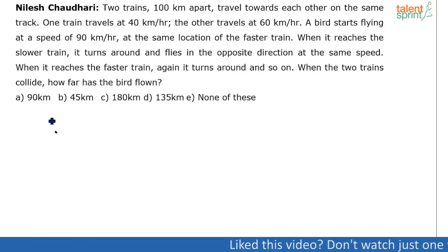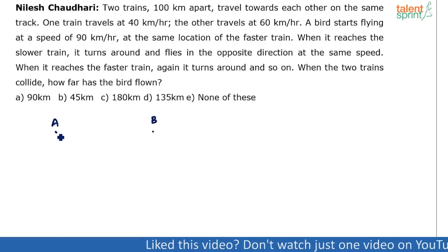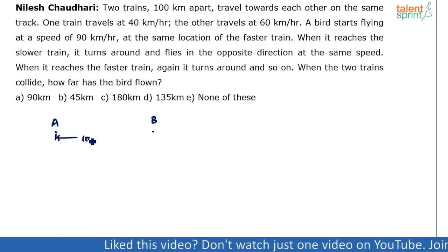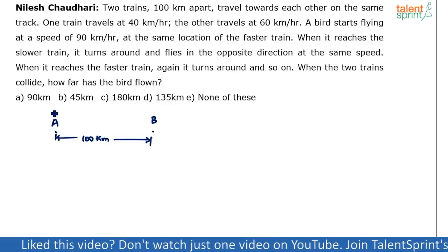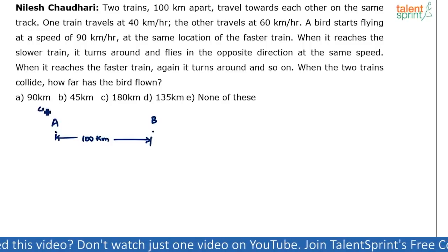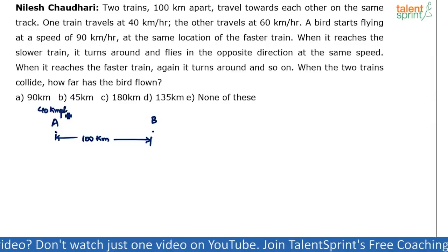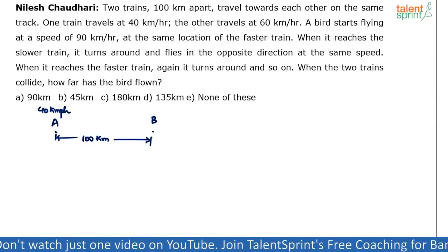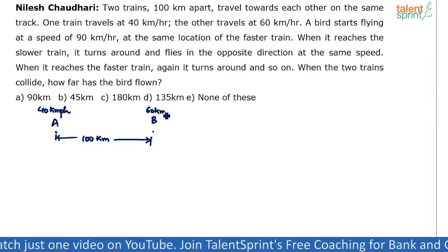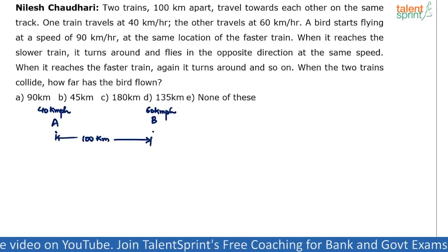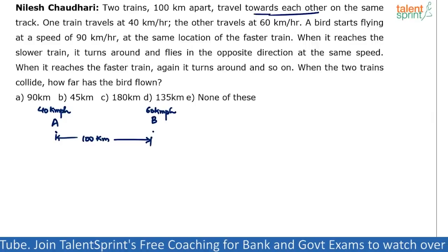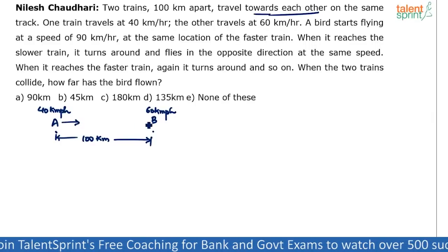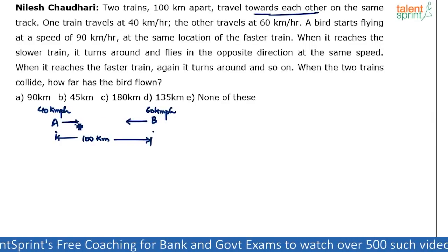Let us assume this is Train A and this is Train B. The initial distance between these two trains is 100 kilometers. Train A is the slower train, traveling at 40 kilometers per hour. Train B is the faster train, traveling at 60 kilometers per hour. They are moving in opposite directions — Train A in this direction and Train B in that direction — traveling towards each other on the same track.